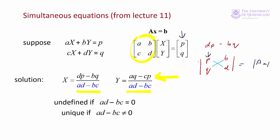Similarly for y, aq minus cp can be expressed as a determinant — that would be a, c in the first column and p, q in the second column, giving a times q minus c times p. In this case we have the second column replaced by the vector of constants.